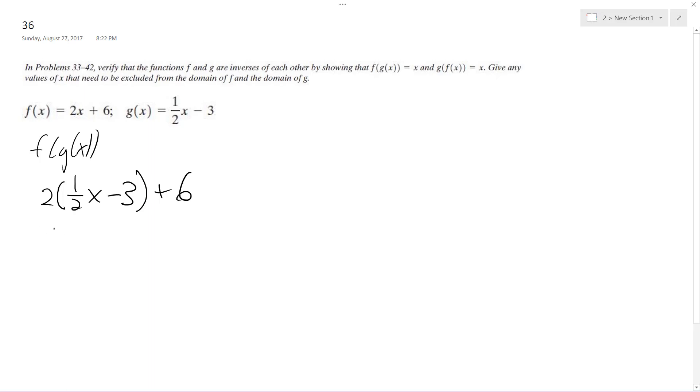Alright, so this ends up being, if we distribute the 2, it's x minus 6 plus 6. These cancel out, we get x.